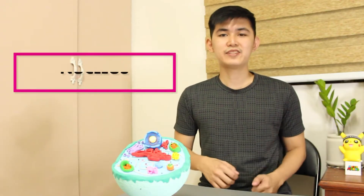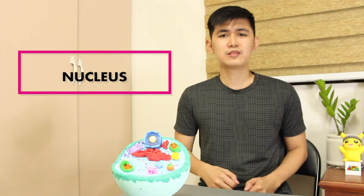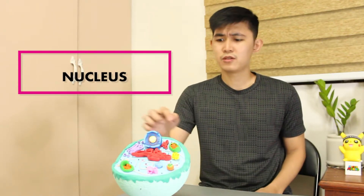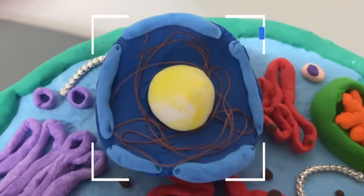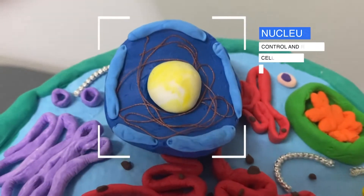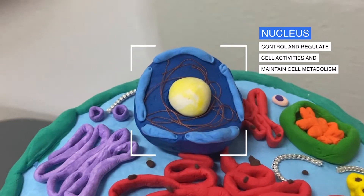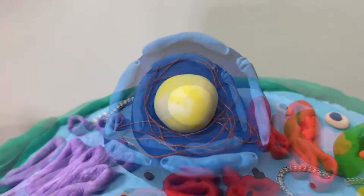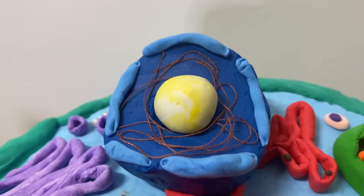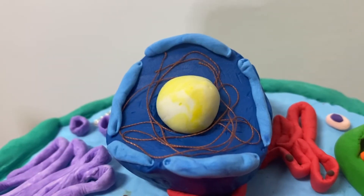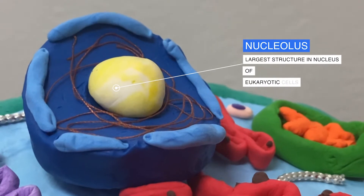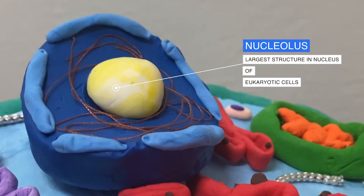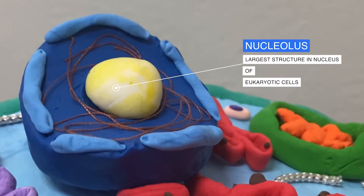Now, let's enter the nucleus. The primary role of the nucleus is to control and regulate cell activities and maintain cell metabolism. The nucleolus is the largest structure in the nucleus of a eukaryotic cell.